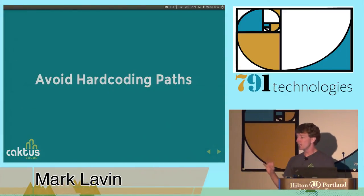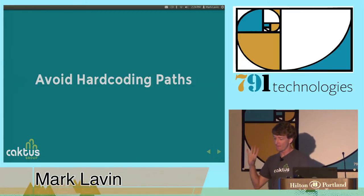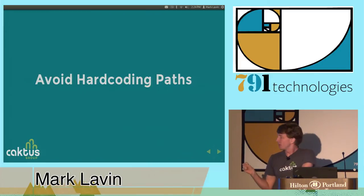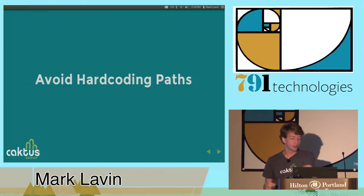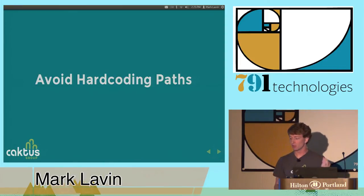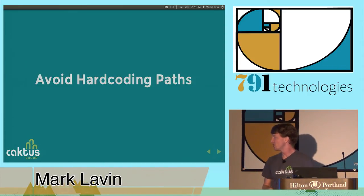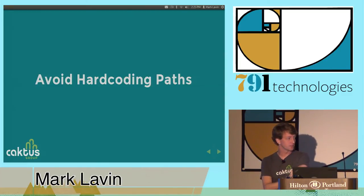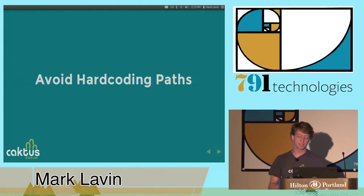You should avoid hard-coding paths — this is another thing to do when building API clients. You should use the URLs and links that are returned from the server when they're given. We saw they're given by Bitbucket. Sadly, most of the Bitbucket clients haven't been updated for version 2. They're also used by GitHub — the GitHub3.py library uses the responses sent back by GitHub.